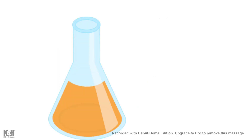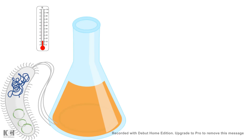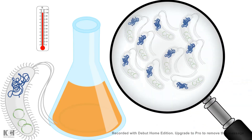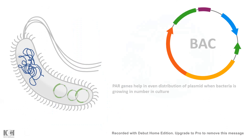Once the plasmid is inside and you give proper temperature for the bacteria to grow, the bacteria would grow in number. The problem with BACs is they are so big — if there is no method to ensure the bacteria equally segregates the BAC in each generation, there is a problem. In order to ensure BACs are segregated properly in each generation, there is the F-plasmid PAR gene, which ensures even distribution of the bacterial artificial chromosome.